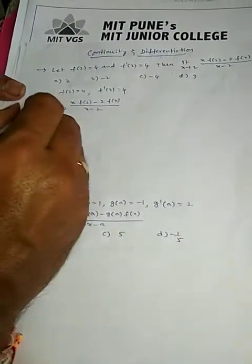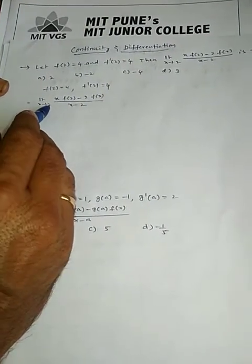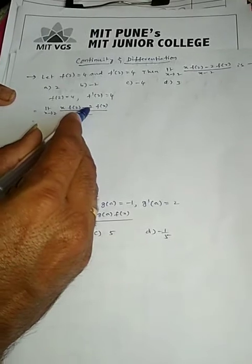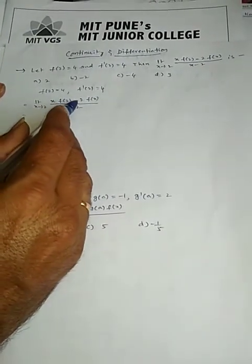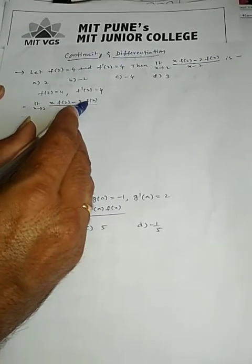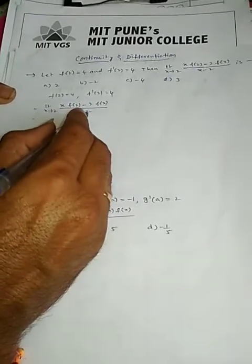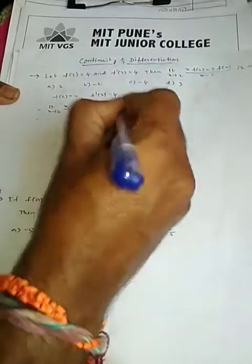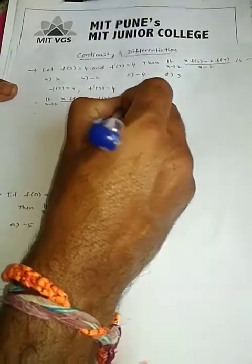When substituting the limit x→2, we get 2·f(2) - 2·f(2) = 0 in the numerator and 2 - 2 = 0 in the denominator. This gives the 0/0 indeterminate form, so we apply L'Hôpital's rule.